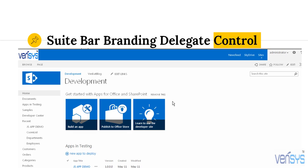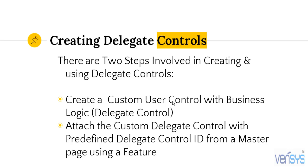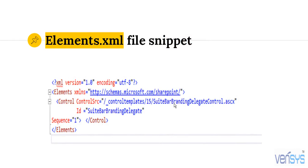I am attaching this Delegate Control with the help of a feature. There are two steps involved in creating and using Delegate Controls. First, we create a custom user control with business logic — that is our Delegate Control. Second, once the Delegate Control is created, we attach it with the actual master page control using a feature. So I am creating my Delegate Control and attaching it with the master page using a feature. That attachment happens in the elements.xml file.